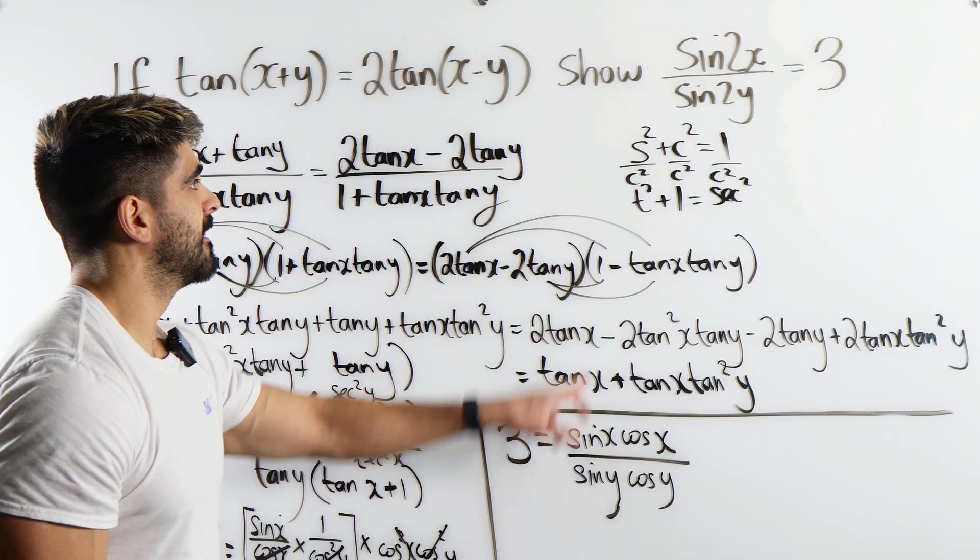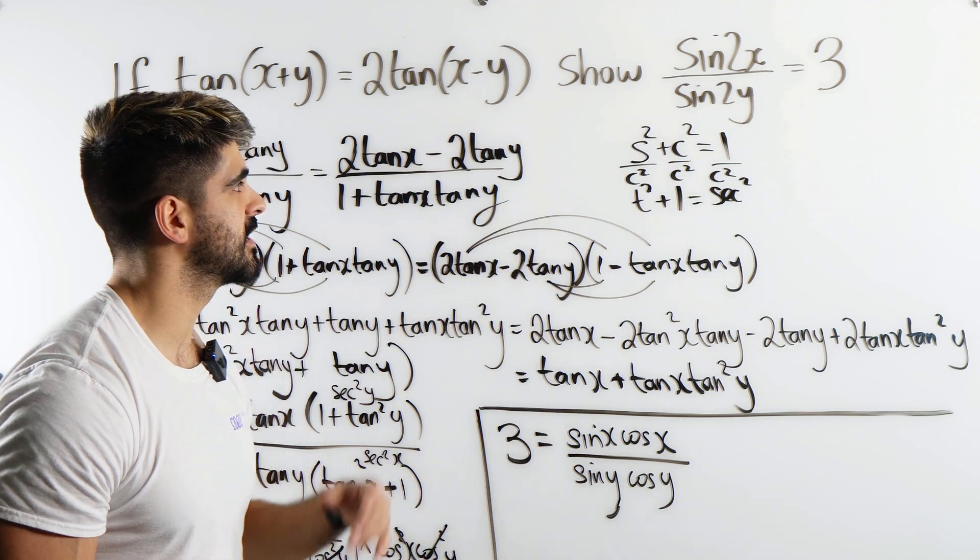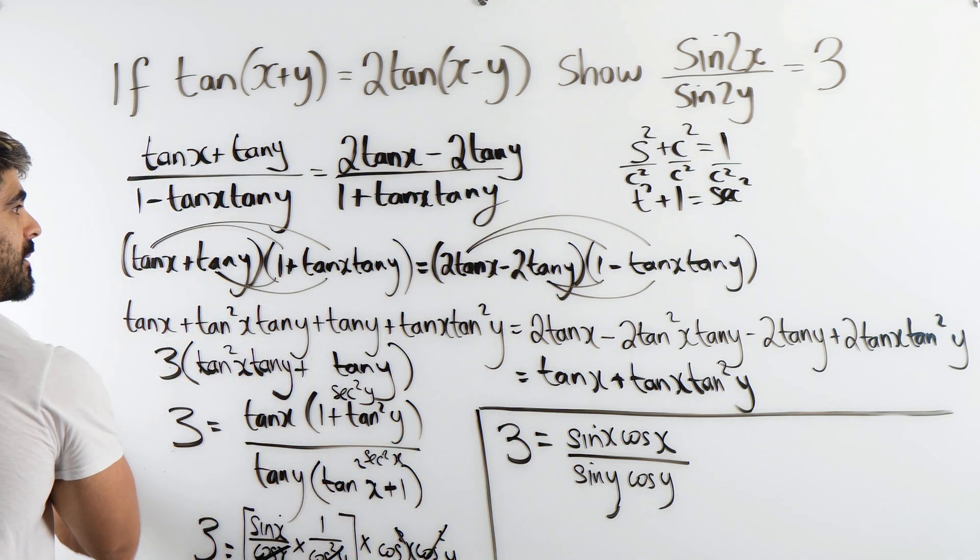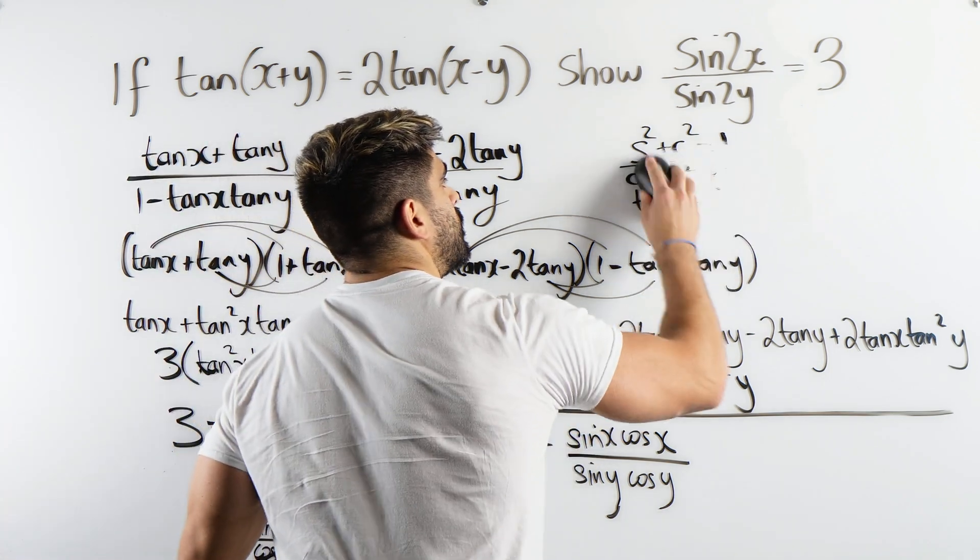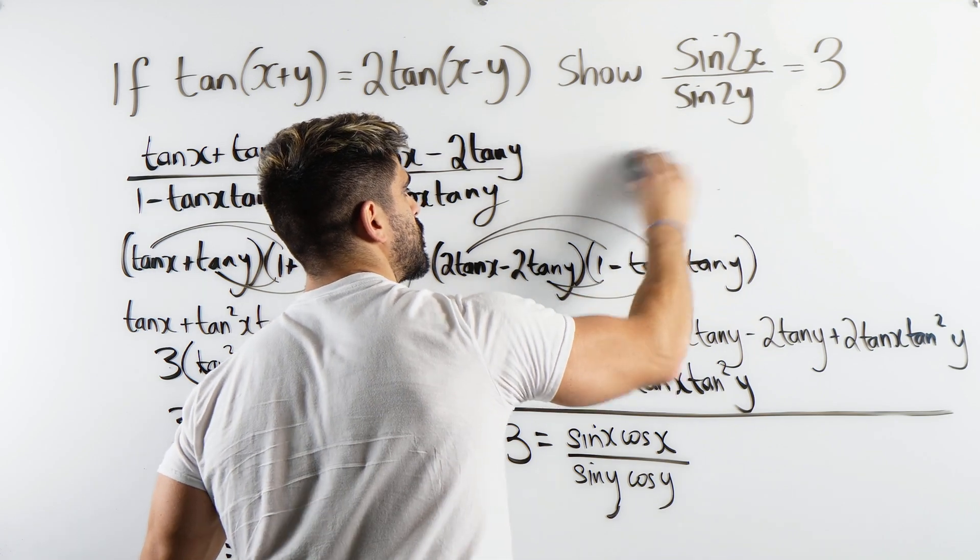Anyway, now look at the answer. Sine 2x, sine 2y. You should notice this as being our double angle identities, which we proved in the last video. The only thing is there's no coefficient here, right?